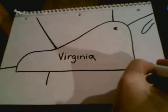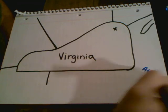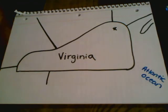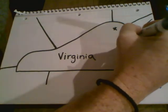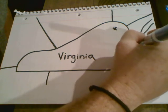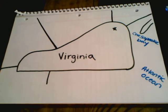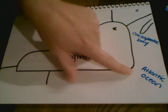Over here is where the Atlantic Ocean is. If you've ever been to Virginia Beach, or even Ocean City, Maryland, you're swimming in the Atlantic Ocean. Up here is what we call the Chesapeake Bay — this is a hard one to spell. We're going to talk a little bit about the importance of the Chesapeake Bay. So those are the two bodies of water that surround Virginia: the Chesapeake Bay and the Atlantic Ocean.